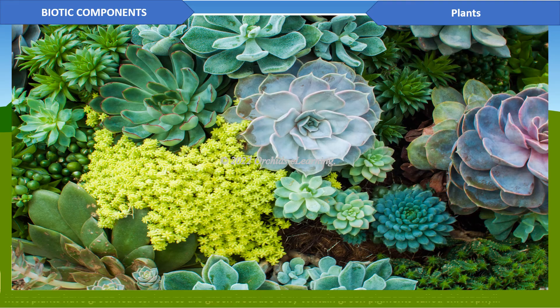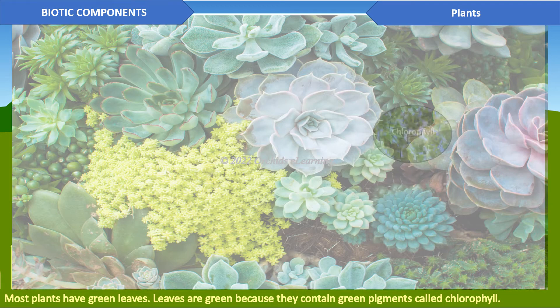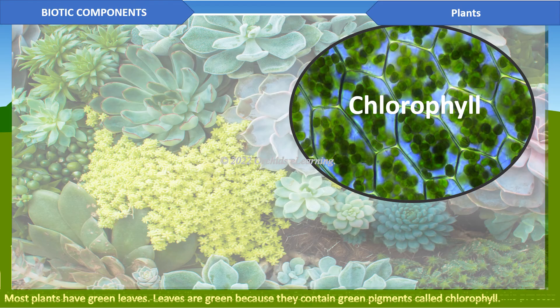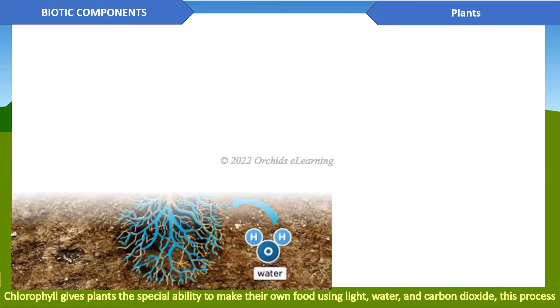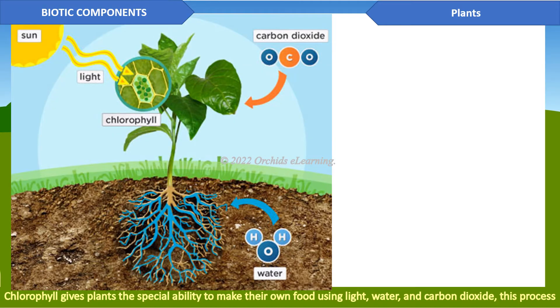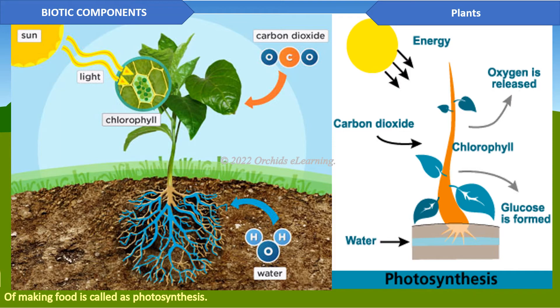Most plants have green leaves. Leaves are green because they contain green pigments called chlorophyll. Chlorophyll gives plants the special ability to make their own food using light, water, and carbon dioxide. This process of making food is called photosynthesis.